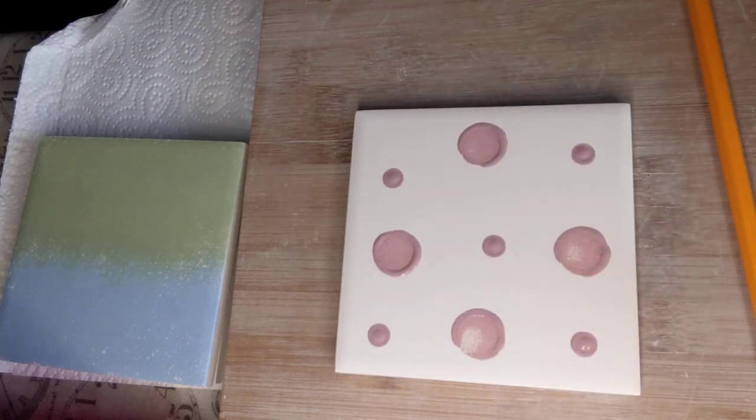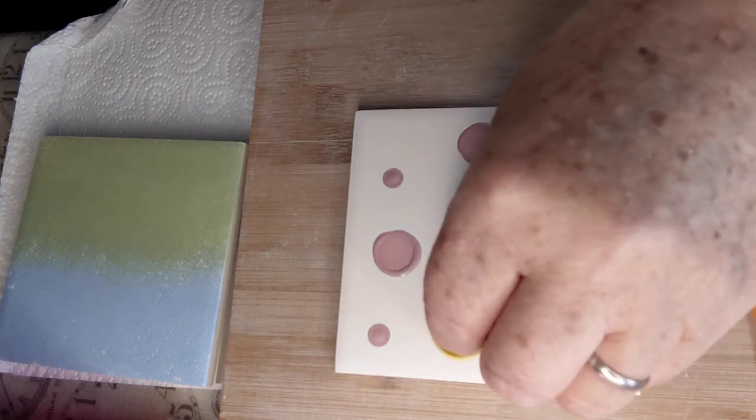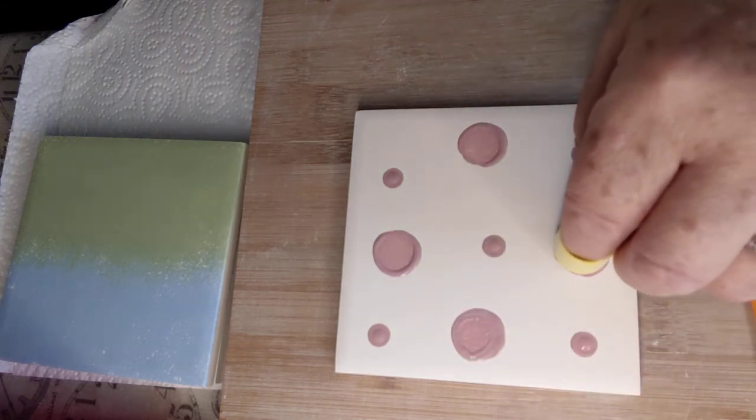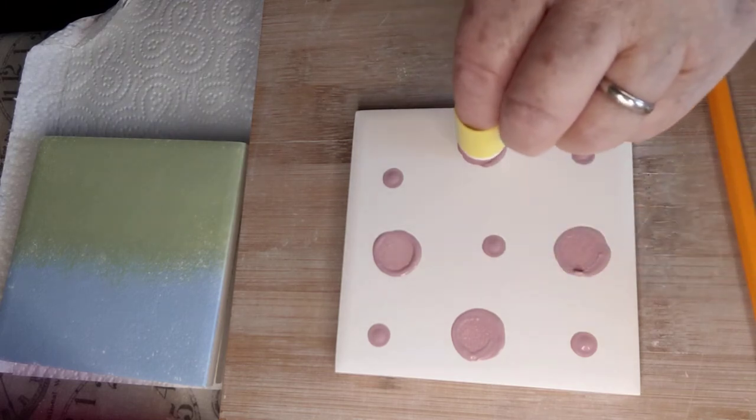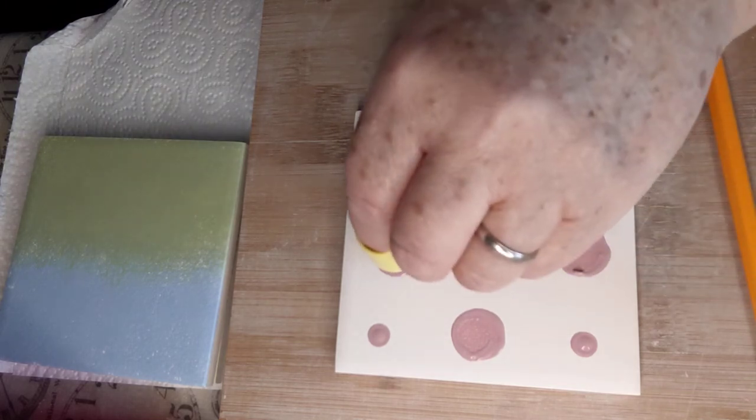Now you may need to go over the larger ones a second time, but just wait until it dries. Don't be impatient like I am, and then you can do a second coat.